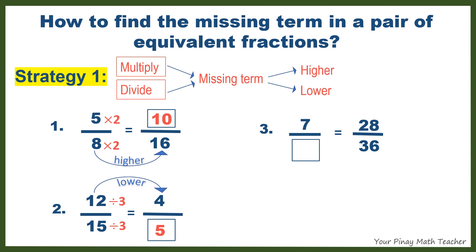Number 3. In this case, the fraction with complete terms is on the right, 28 over 36. 28 gets lower to 7. It also means that you have to divide 28 by 4 to get 7. Do the same with 36. So the missing term is equal to 9.